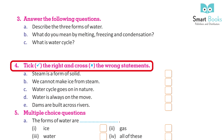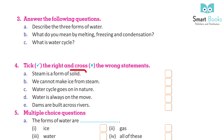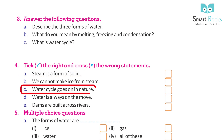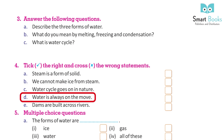Tick the right and cross the wrong statements: A. Steam is a form of solid. B. We cannot make ice from steam. C. The water cycle goes on in nature. D. Water is always on the move. E. Dams are built across rivers.